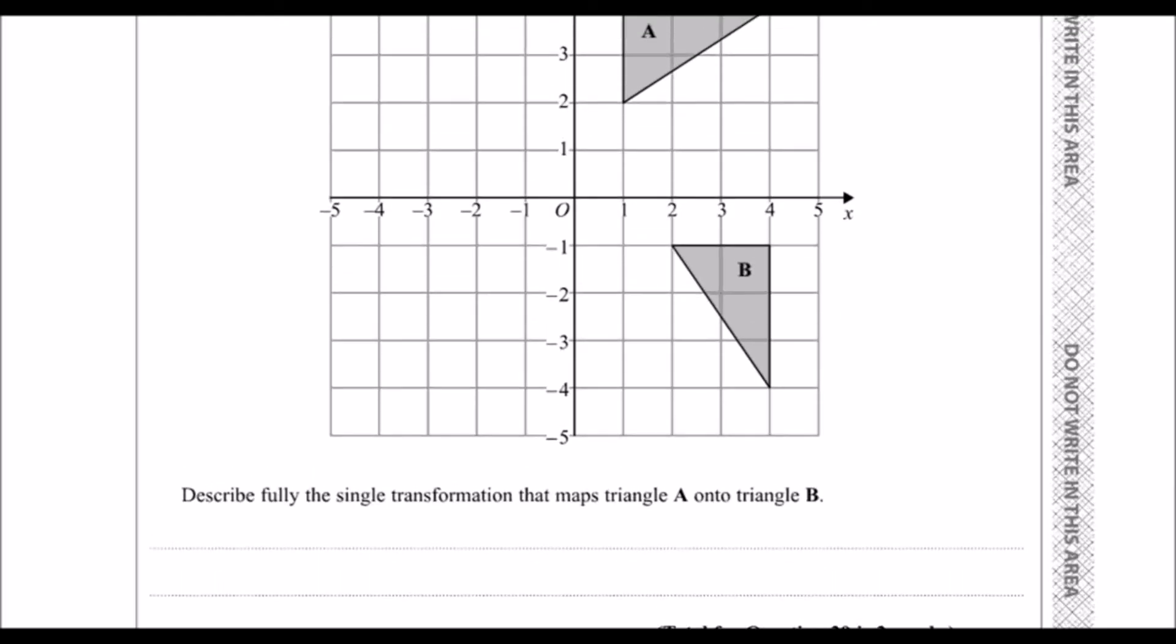Describe fully the single transformation that maps triangle A onto triangle B. So, what's happened to triangle A to get it to triangle B?